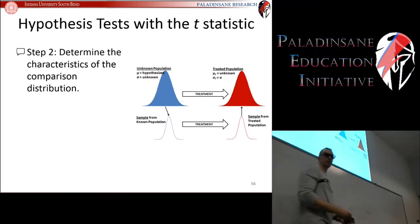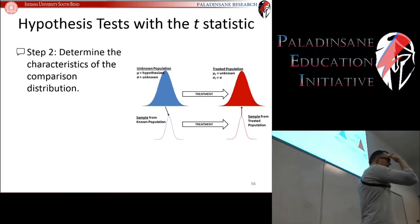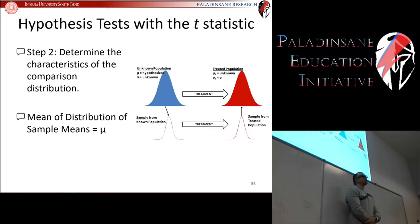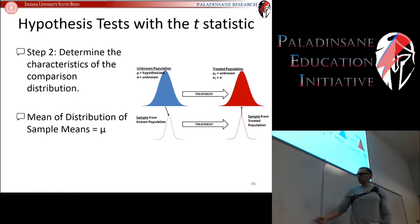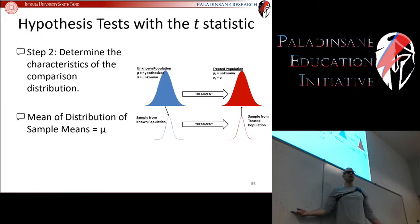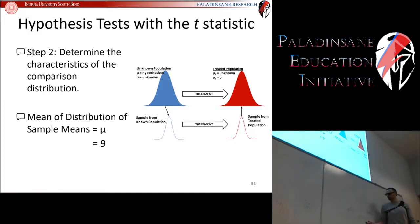Step two: determine the characteristics of the comparison distribution. The mean of the distribution of sample means stays the same as the mean of the population — we determined that's nine hours. That's the mean of our comparison distribution as well. The change comes when we look at the standard deviation of our comparison distribution.